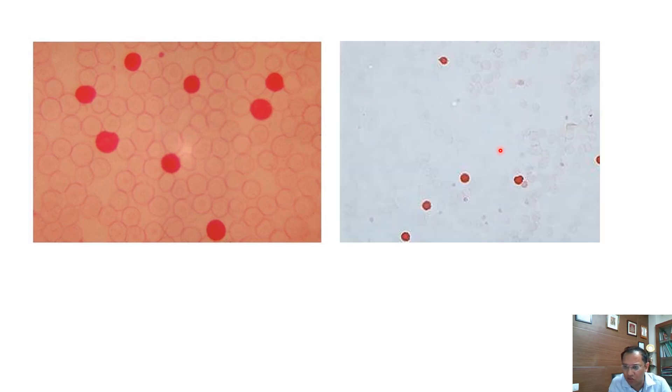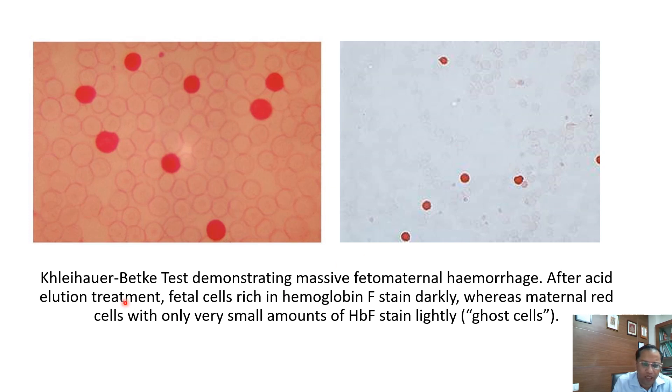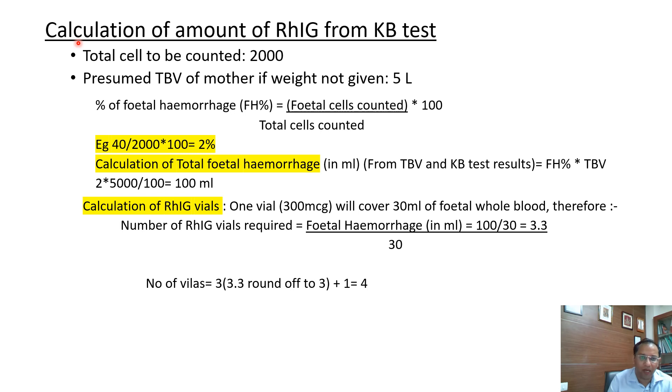This is how the KB test looks: the bright red cells are fetal RBCs, and the silhouettes in the background are ghost cells — the lysed maternal RBCs. This demonstrates massive fetomaternal haemorrhage after acid elution treatment: fetal cells rich in HbF stain darkly, while maternal HbA cells appear as ghost cells.